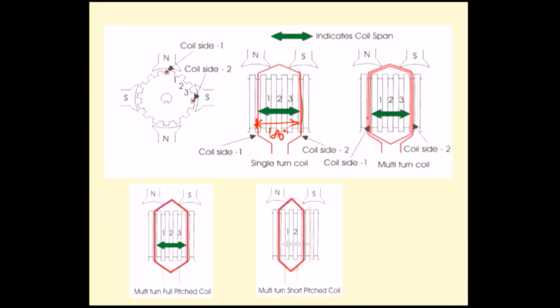If it is in the 9th slot, that's one slot short pitched. If in the 8th slot, that's two slots short pitched, and so on. Full pitch means slot per pole should be satisfied - first slot to 10th slot in this example.